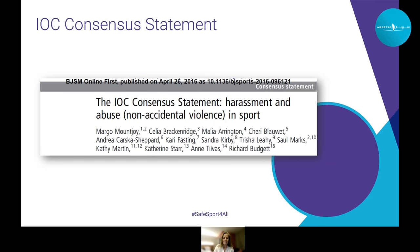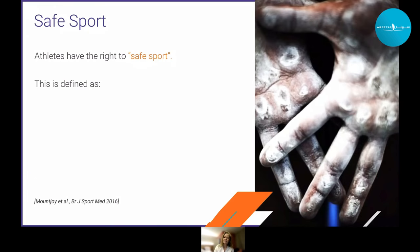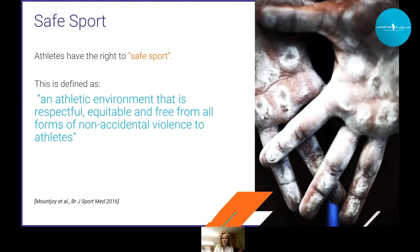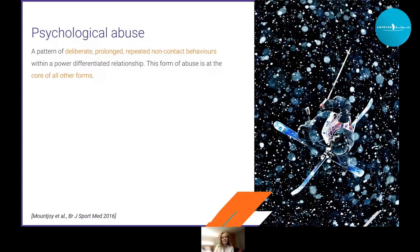Much of the information discussed today is embedded in the 2016 consensus statement from the BJSM — an update and expansion of the 2008 sexual harassment consensus statement. That document defines 'safe sport' as an athletic environment that is respectful, equitable, and free from harassment and abuse — a fairly standard definition we can all strive for. It identified four different kinds of abuse.